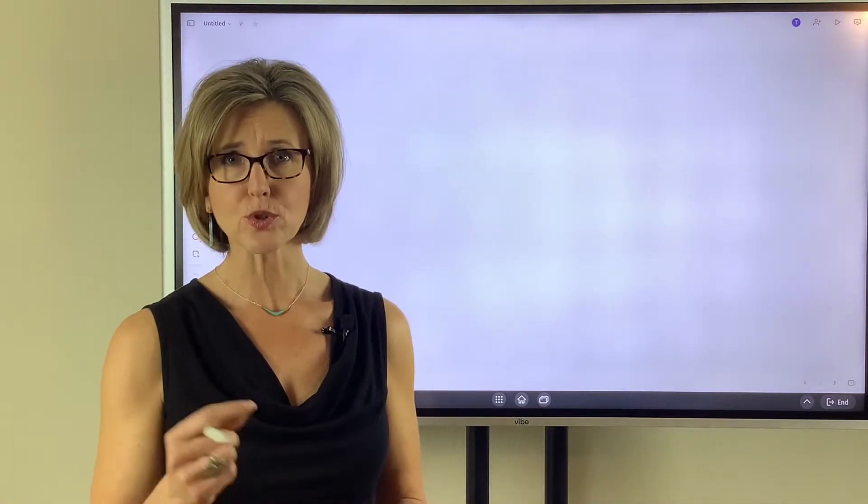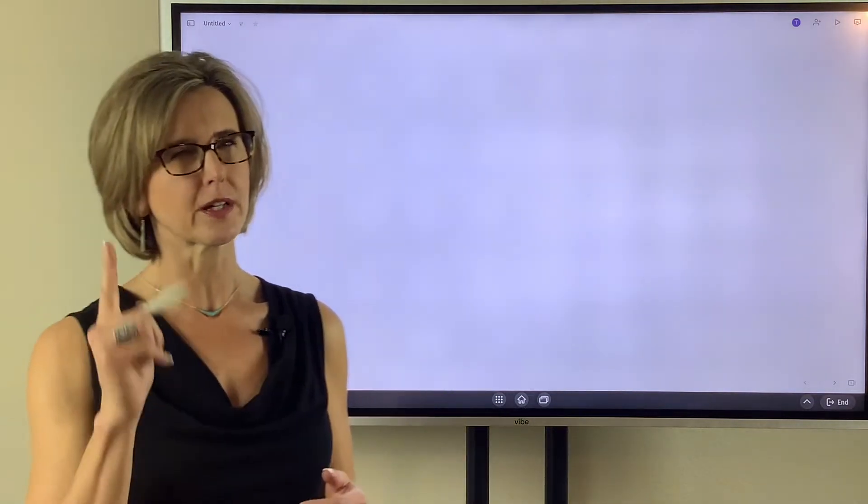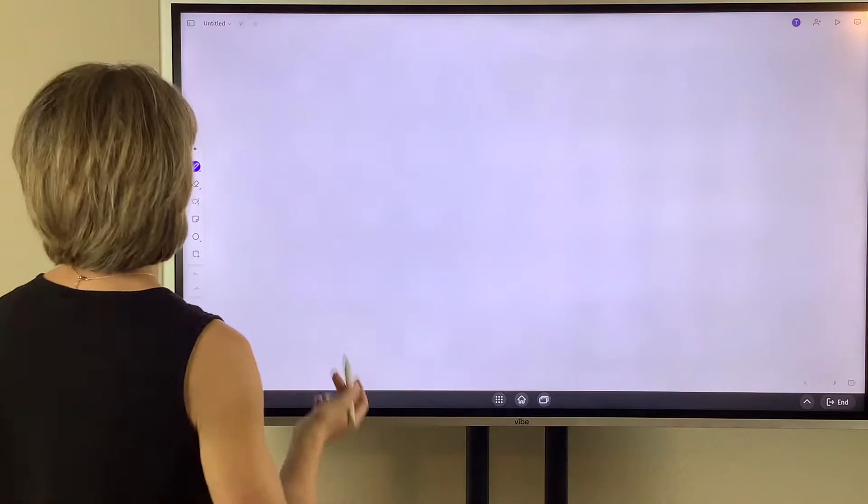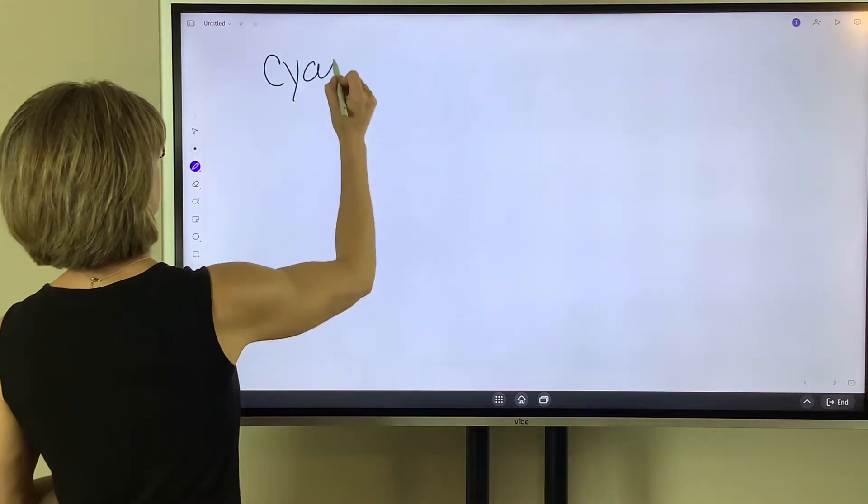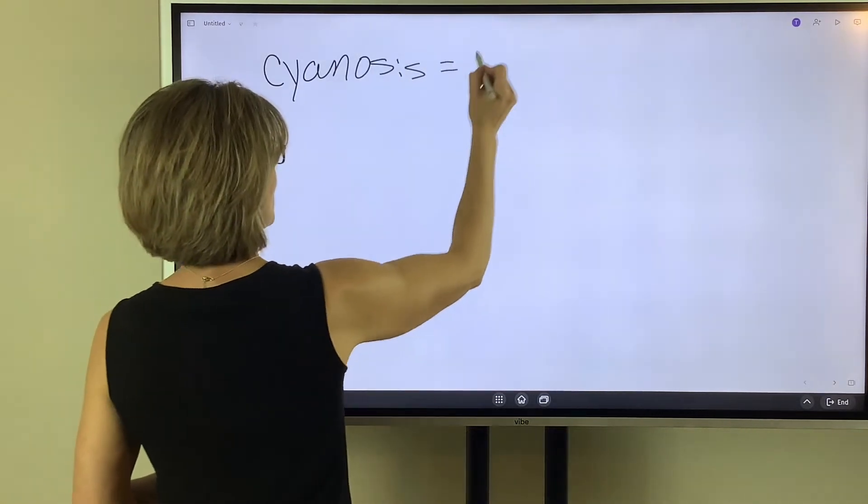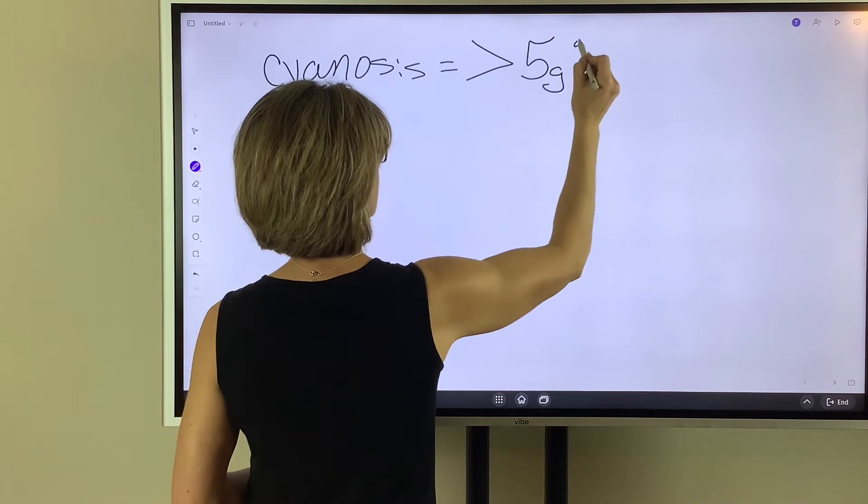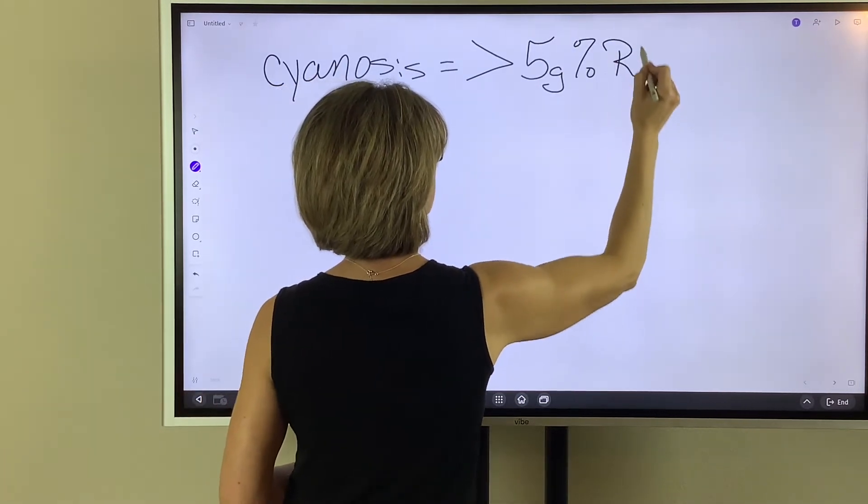So I want to talk about what it truly is, the true definition of cyanosis, but I want to explain it where you understand it so it's not as complicated. So cyanosis, if we define it, is greater than 5 grams percent of reduced hemoglobin.